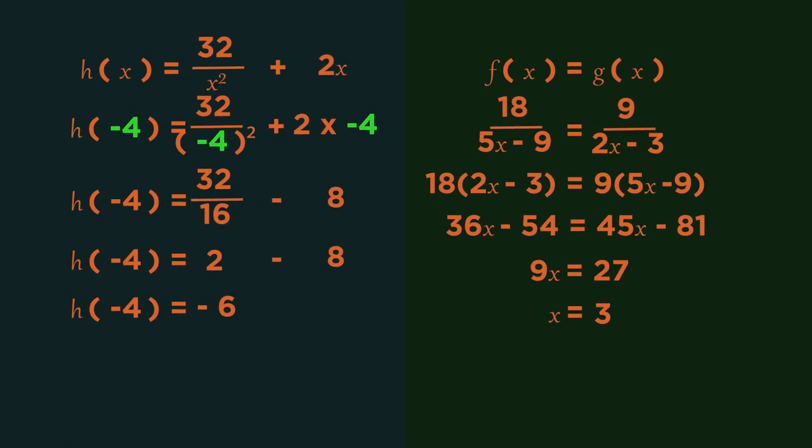How did you get on? Did you get the function of h equals -6 when the input is -4? And x = 3 when function f and function g are equal?